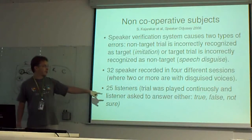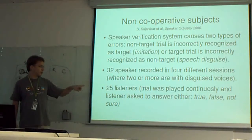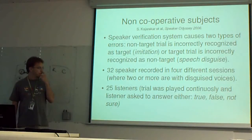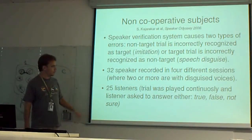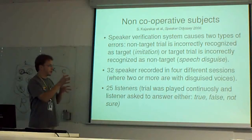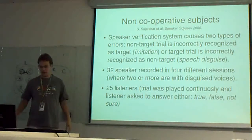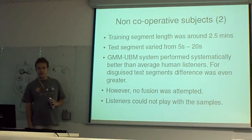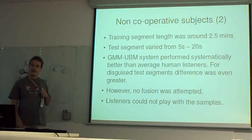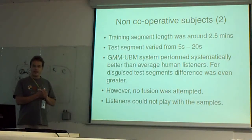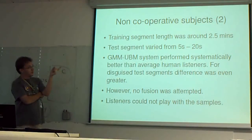The 25 listeners had to say for each trial whether it was true, false, or unsure — so they had a third option. Sample one, atrox one, atrox two were played back continuously. There was a separate training segment and separate test segments — the training segment was 2.5 minutes, and the test was very short, 5 to 20 seconds. The idea is that if you force people to listen to long segments, they will get very bored.